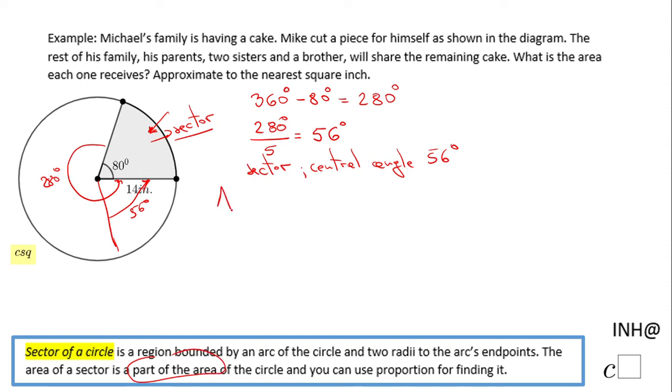The area of the circle will be πr². In this case, you have π times 14², and 14² is 196. So the whole cake is 196π.